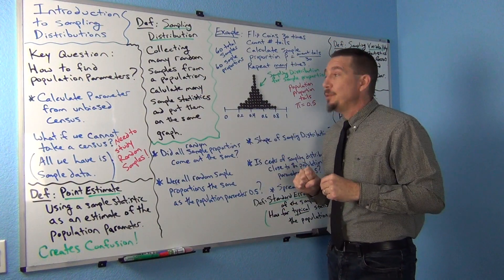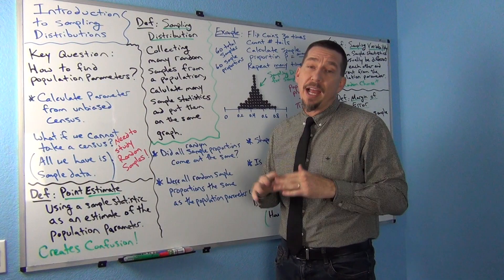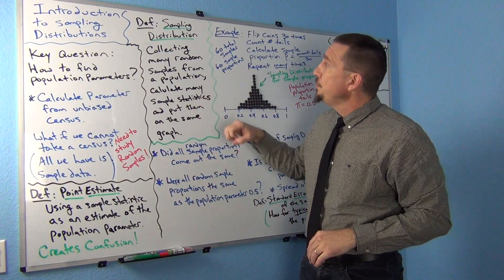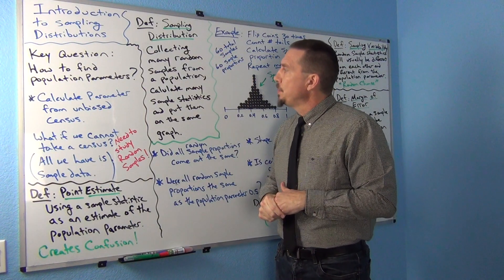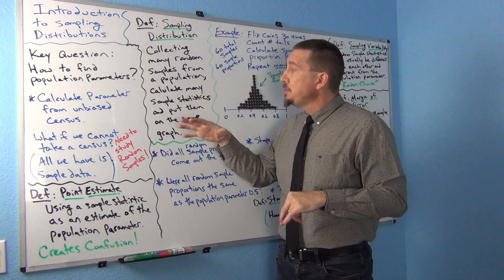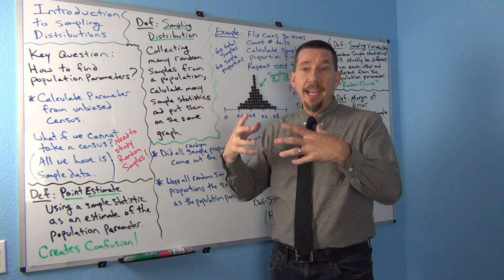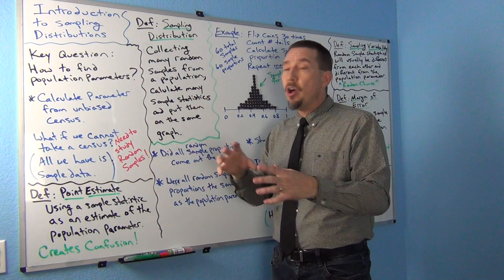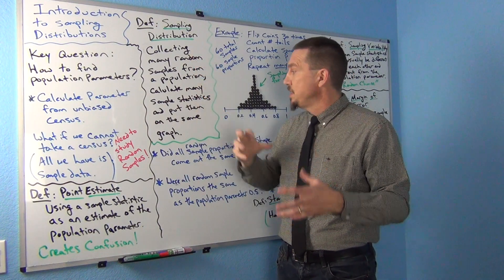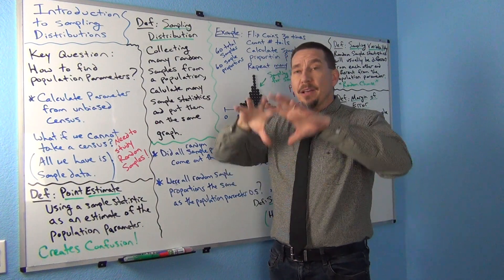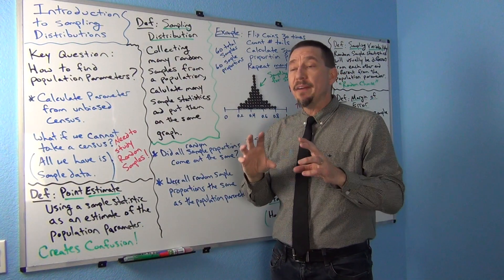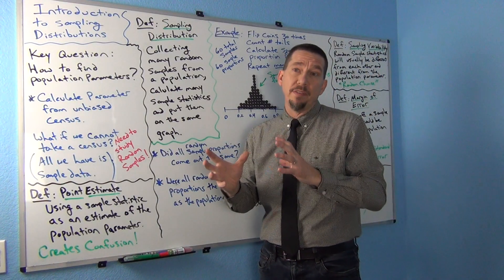The key concept of this section is called a sampling distribution — one of the most famous graphs in statistics. It teaches us a lot about how parameters and sample statistics work. A sampling distribution involves collecting many random samples from a population, usually thousands, calculating a sample statistic from each of those samples — so you get like a thousand sample means or a thousand sample proportions — and then putting them all on the same graph or distribution.